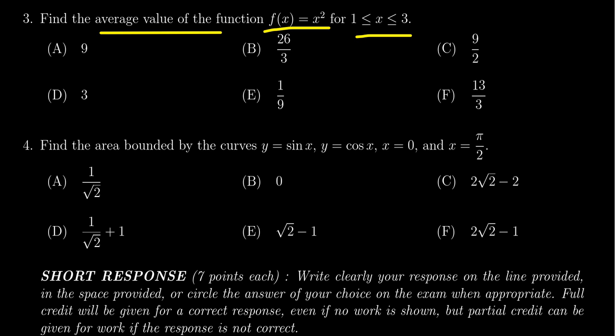This is a fairly straightforward calculation where we apply the formula for average value. We're going to take one over b minus a. In this situation, b and a are given as three and one. We will integrate on that same interval from a to b, and then we have the function x squared dx.